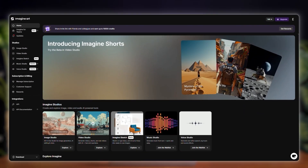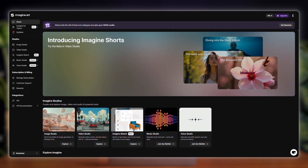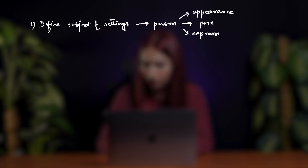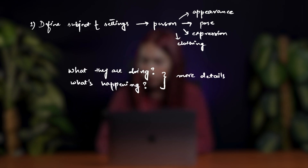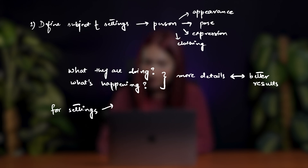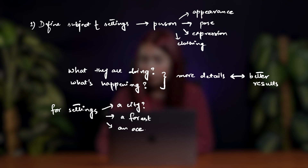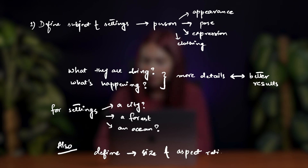We'll use ImagineArt because it's super easy and gives the best results. The first step is to define a clear subject and setting. Don't just say 'person' — be specific. Specify the appearance, pose, expression, and clothing. Explain what they're doing and what's happening around them. The more details you provide, the more accurate the AI's output will be. Similarly, describe the setting — is it a cyberpunk city, a magical forest, or the bottom of the ocean? You can also define the size and aspect ratio of your image in this first step.